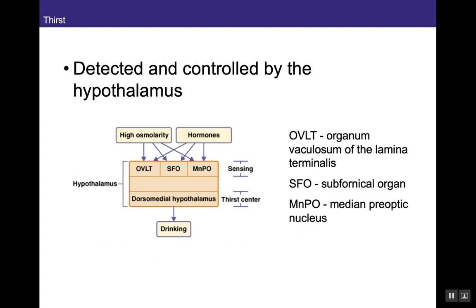The osmoreceptor regions include the OVLT (organum vasculosum of the lamina terminalis), the subfornical organ (SFO), and the median preoptic nucleus (MnPO). These sense high osmolarity in the blood. Once high osmolarity is detected — for example in severe dehydration — a signal is sent to the dorsomedial hypothalamus, which initiates a profound drinking response. This is the thirst center, so in addition to stimulating vasopressin production, it also triggers drinking behavior.